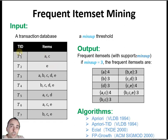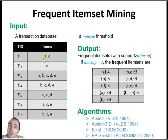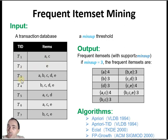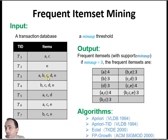So transaction 1 means some people have bought A and C, like apple and cake. Transaction 2 means some people have bought some eggs. Transaction 3 means some people bought apple, bread, cake, and so on.